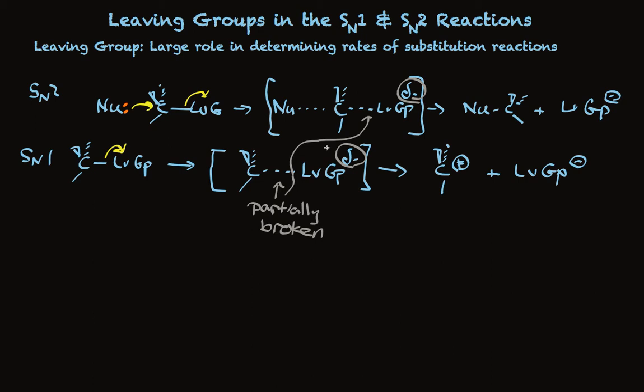One is the strength of the bond that we're breaking. And the other is the ability of that leaving group to accommodate negative charge, if, in fact, negative charge is being created, and it usually is. So those two factors lead to the following experimental facts.